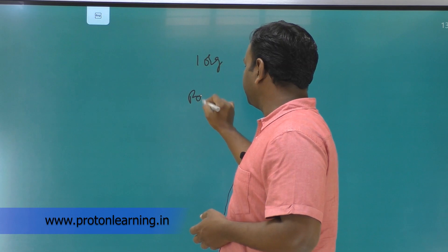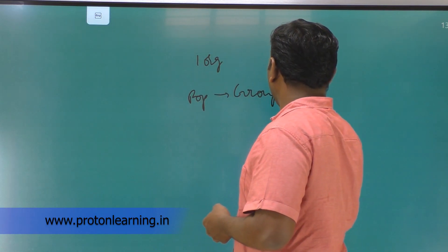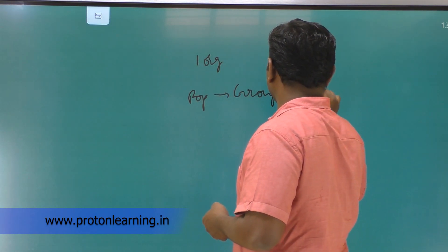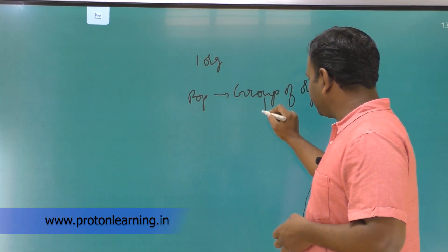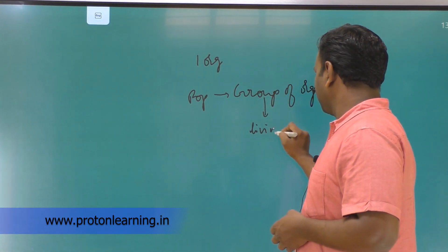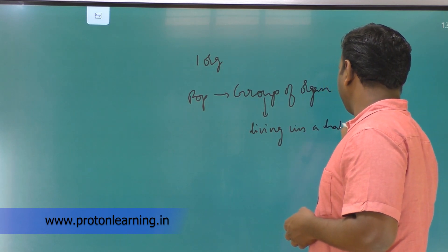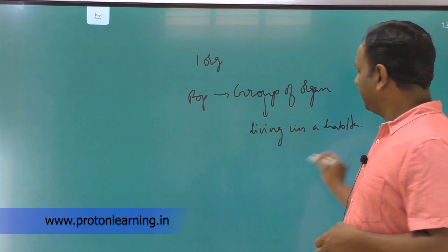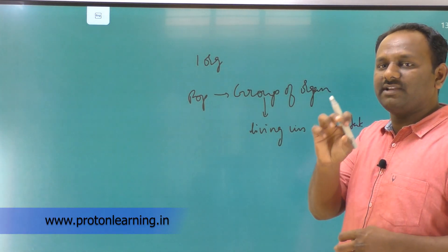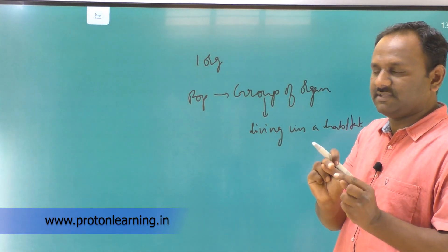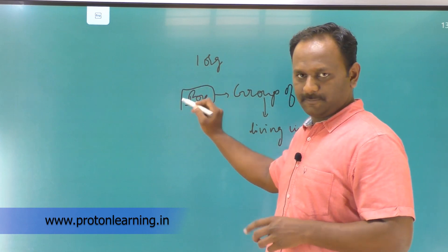What is population? Population means a group of organisms which are living in a habitat, in one area, one specific species. That is population.